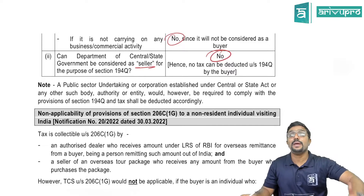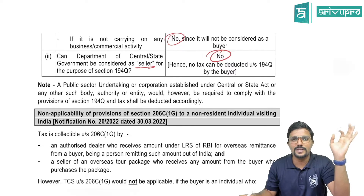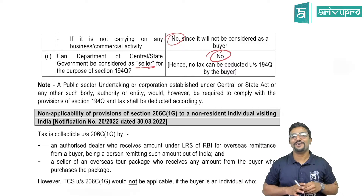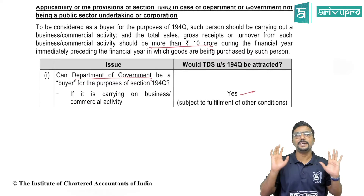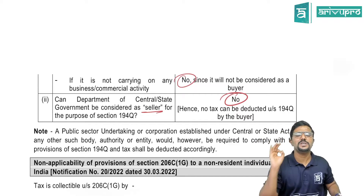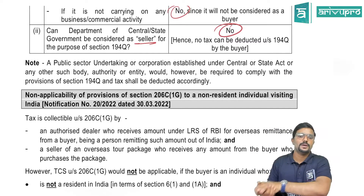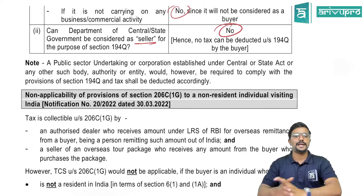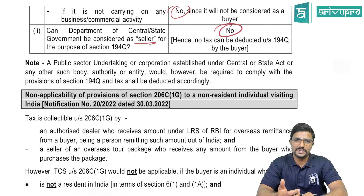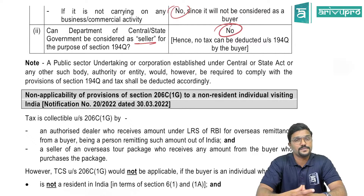The clarity given is: if the government department is the seller, the buyer need not deduct TDS regardless of who the buyer is or what their turnover is. Note that a public sector undertaking or corporation established under central or state act could however be required to comply with the provisions of Section 194Q, and tax shall be deducted accordingly — there is no specific exemption given for PSUs or corporations when they are buyers.